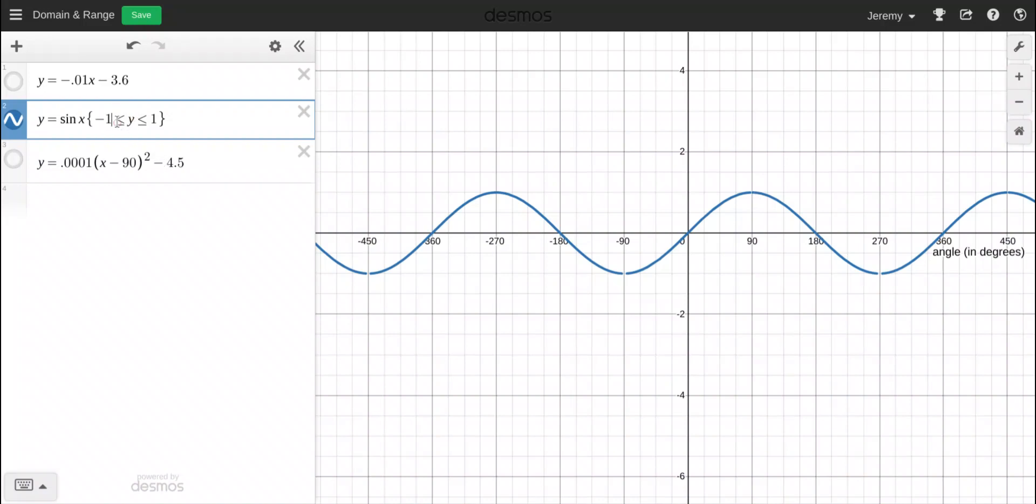However, if I change this to a zero, notice what happens. The sine graph that was a sinusoid, it goes down, up, down, up, it's only going to exist as long as the Y value is between zero and one, which is why it's only doing the top hump and not the bottom hump.